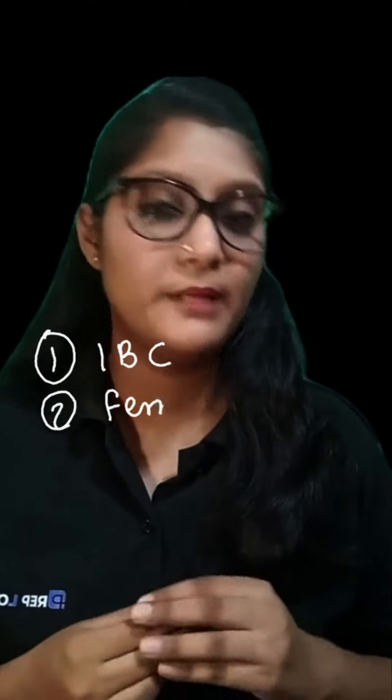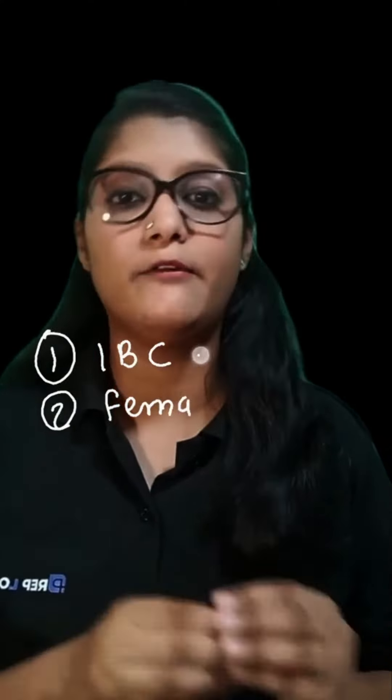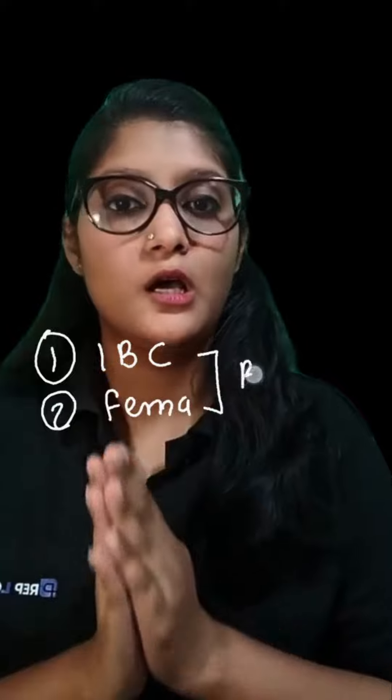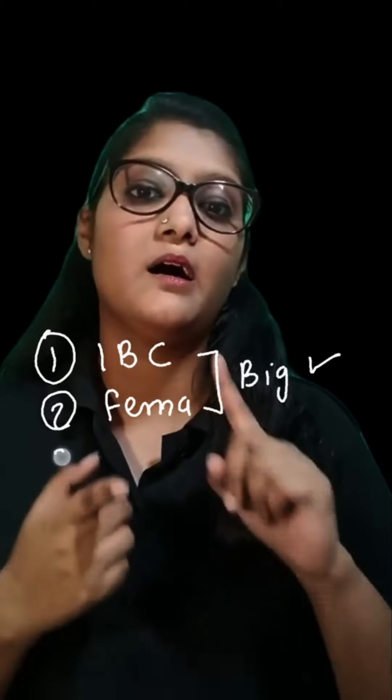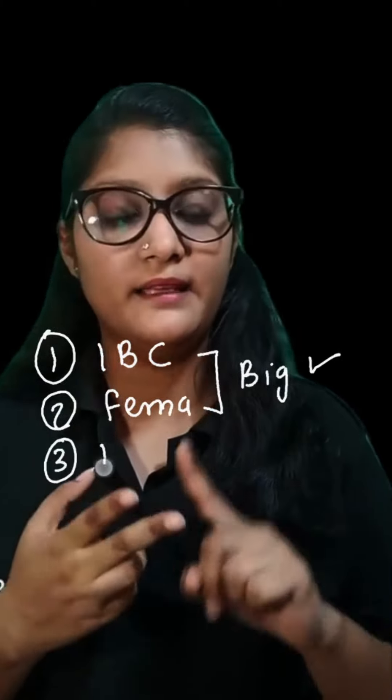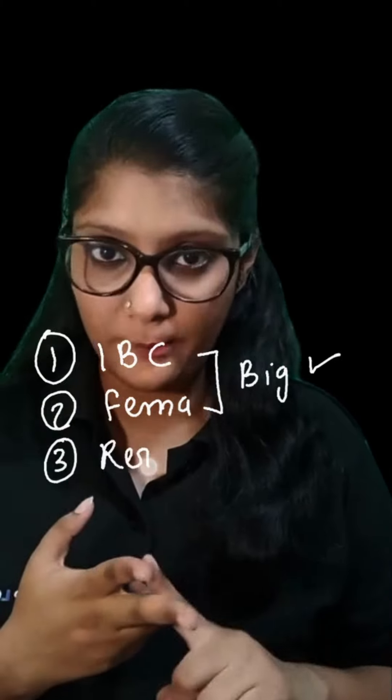Here is the sequence of what you need to do. First, we will cover the big chapters — IBC and FEMA. Once we complete those big chapters, after that you should do some smaller chapters like RERA and then Competition.